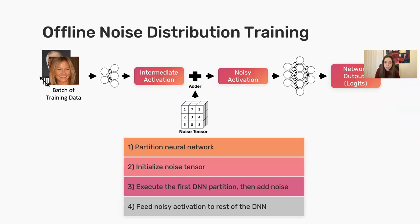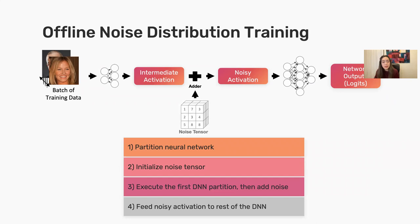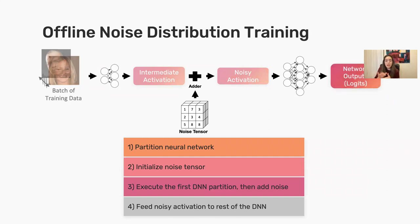To learn these noise distributions, we take a pre-trained model and partition it into two segments. The partitioning is important because you want to take into account the communication and computation cost trade-off and the restrictions of your edge device. We find the optimal cutting point and split the network there. We then initialize a noise tensor with a random sample from a Laplace distribution. We execute the first DNN segment, add this noise to get noisy activations, feed them to the rest of the network on the cloud, get the logits, and run backprop to update the parameters.